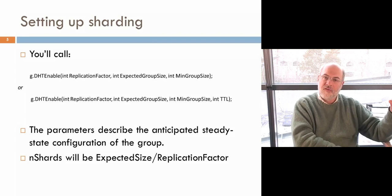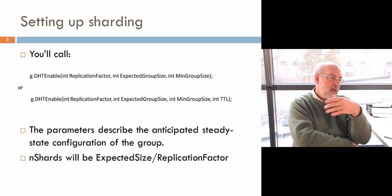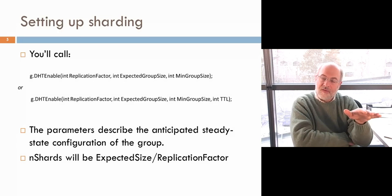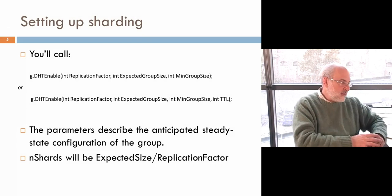There's an overload where you can specify how long items put into the DHT should be retained — a time-to-live (TTL) value in milliseconds. When that time expires, we automatically clear the item out of the DHT, garbage collecting in an automated way. You can also garbage collect by getting rid of the entire group: call g.terminate, the group goes away, and all data within it goes away.